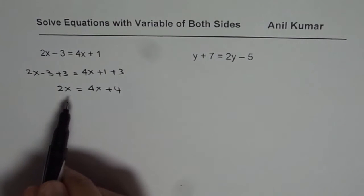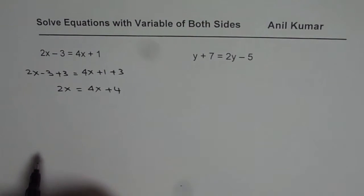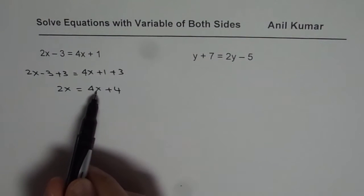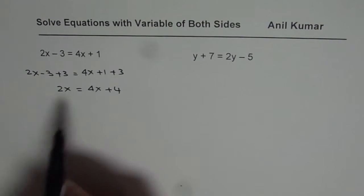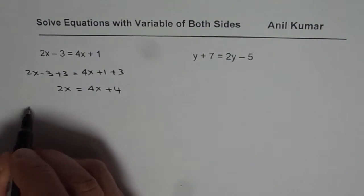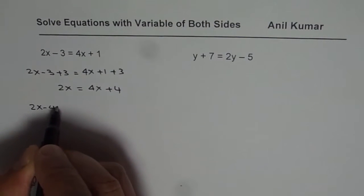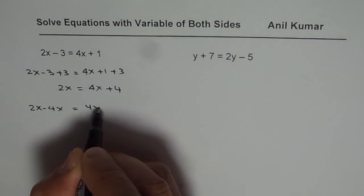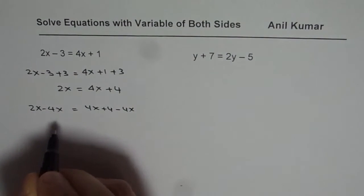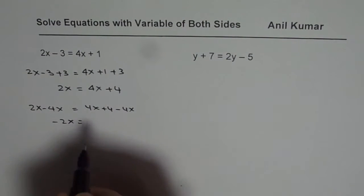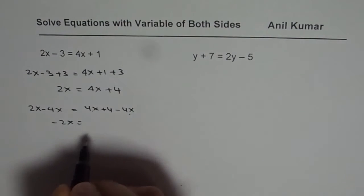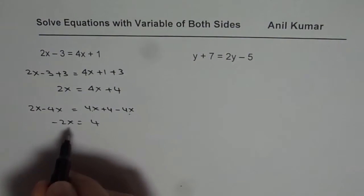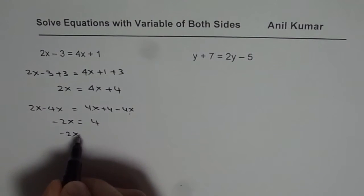With this result we have constants only on the right side. Now let us get variables only on the left side. For that I have to take away 4x from both sides. So we will do 2x minus 4x equals to 4x plus 4 minus 4x. 2x minus 4x is minus 2x. 4x plus 4 minus 4x, these two things become 0. We are left with 4. So to get the value of x what should we do now?